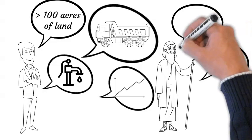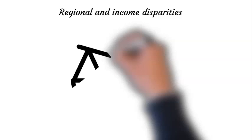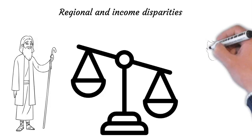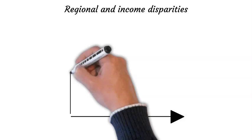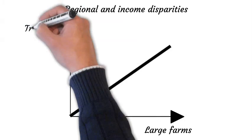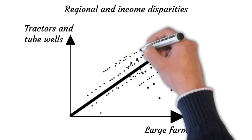Given the close correlation between large farms in specific regions and ownership of tractors and tube wells, the impact on regional and income inequality is self-evident. While the green revolution introduced high-yielding varieties with extensive use of farm machinery to improve production, access to tube wells and credit was inaccessible to poor farmers, and hence they did not share in the fruits of the green revolution.